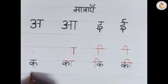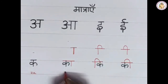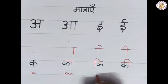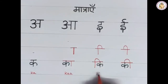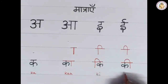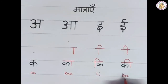So we have: 'Ka' — K+a, 'Kaa' — K+aa, 'Ki' — K+i (Choti Ki), and 'Kee' — K+ee (Badi Ki).